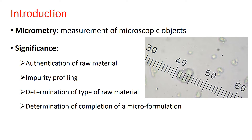Micrometry also helps us determine the type of raw material. For example, starch is present in almost all plants and is commercially required for various purposes: as a binding agent, disintegrating agent, sweat absorbent in surgical gloves, bulk forming agent, and gliding agent. Commercially there are four kinds of starch normally used: maize starch, rice starch, wheat starch, and potato starch.